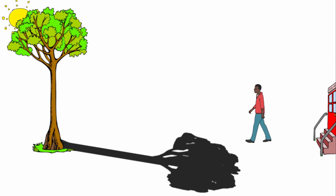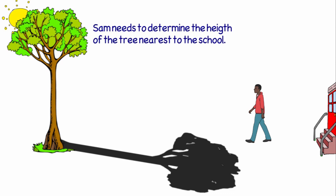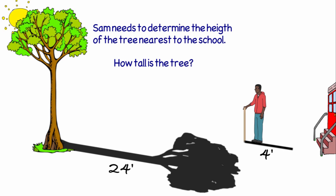Now let's see if we can help out Sam. Sam needs to determine the height of a tree nearest to the school. When he stood his yardstick perpendicular to the ground, he found the shadow was four feet long. Then he measured the length of the tree's shadow and found it was 24 feet long. How tall is the tree? Pause the video while you're figuring out the height, then unpause the video and check your answer.